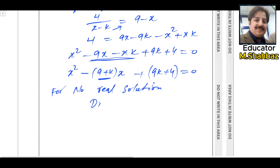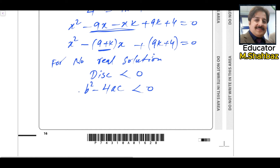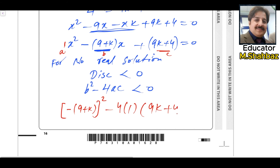Since the line does not cross the curve, there is no real solution. For no real solution, the discriminant is less than zero — that is, b squared minus 4ac is less than zero. Plugging in the values: negative (9 plus k) squared minus 4 times 1 times (9k plus 4) is less than zero.